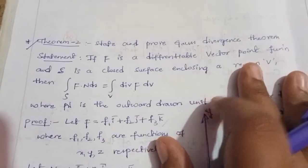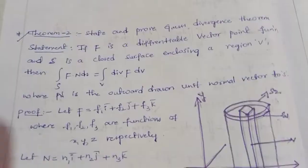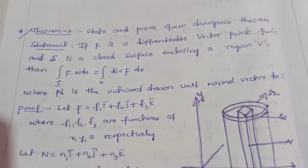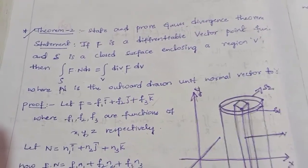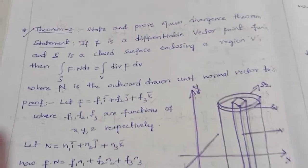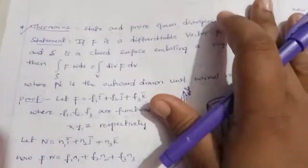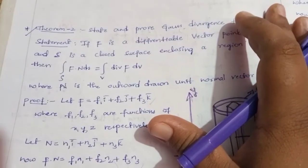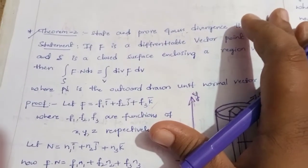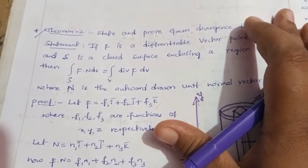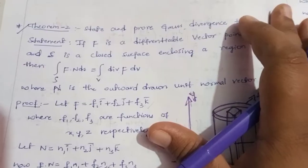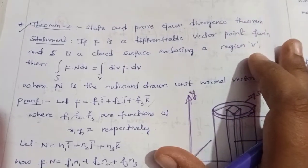Hi, hello. Fifth unit start with the third year, fifth semester, fifth paper. Ring 3, fifth unit start. Vector integrations and applications. We will start with the last class: Green's theorem.